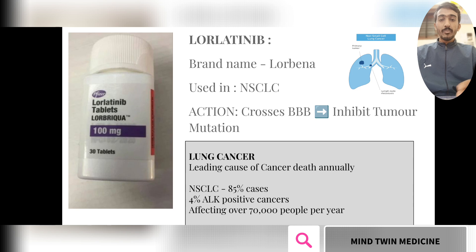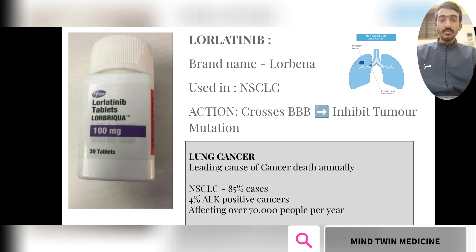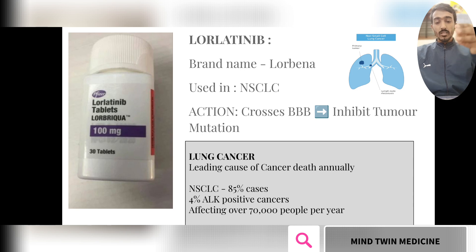To start with the series, we have a drug called lorlatinib, brand name Lorbina, which is used in non-small cell carcinoma of the lungs (NSCLC). It crosses the blood-brain barrier and inhibits tumor mutation by inhibiting the ALK enzyme — that is, anaplastic lymphoma kinase. Among NSCLC cases, 85% will be ALK positive, which is approximately 70,000 people per year affected by this ALK-positive cancer.